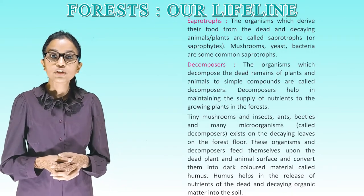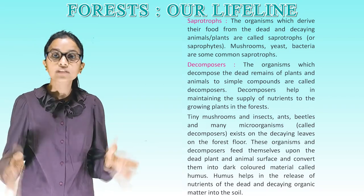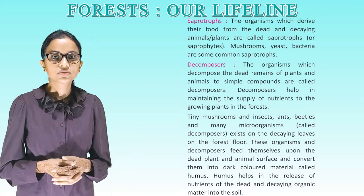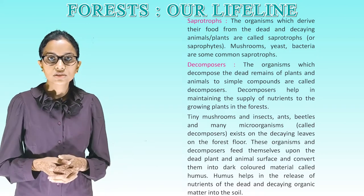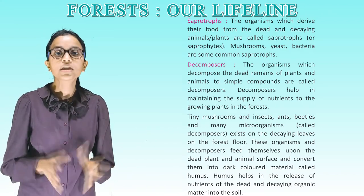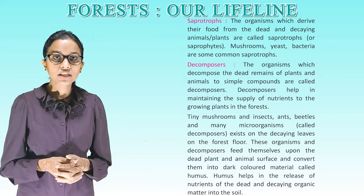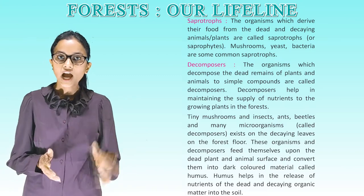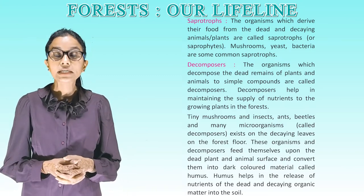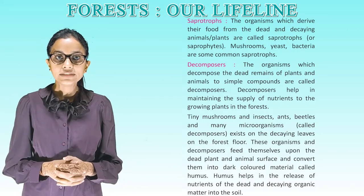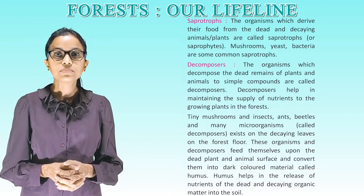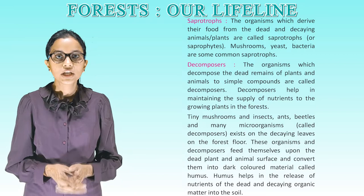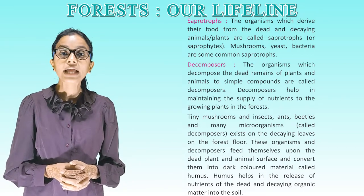Saprotrophs are organisms which derive their food from dead and decaying animals and plants; mushrooms, yeast and bacteria are common saprotrophs. Decomposers are organisms which decompose the dead remains of plants and animals into simple compounds, helping maintain the supply of nutrients to growing plants. Tiny mushrooms, insects, ants, beetles and many microorganisms called decomposers feed on decaying leaves on the forest floor, converting them into dark-colored material called humus. Humus helps in the release of nutrients from dead and decaying organic matter into the soil.